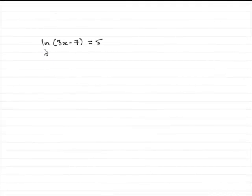In order to solve this equation, natural log of 3x minus 7 equals 5, what we've got to do is we've reduced it down to two terms, so that's fine. One term on this side, one term on that side.